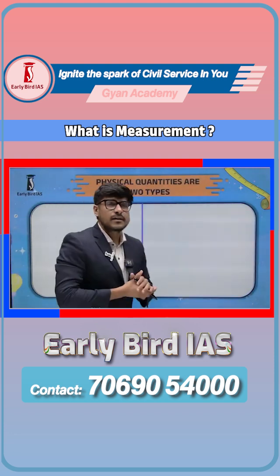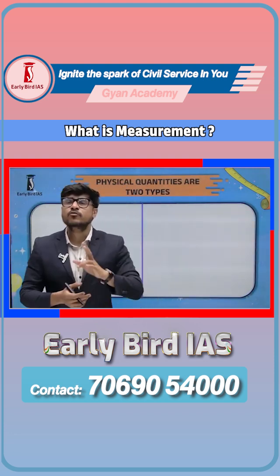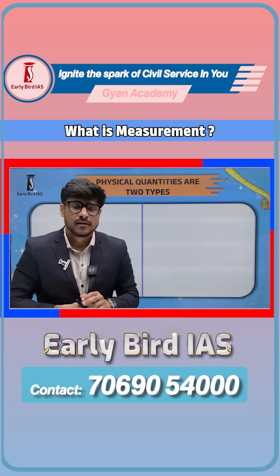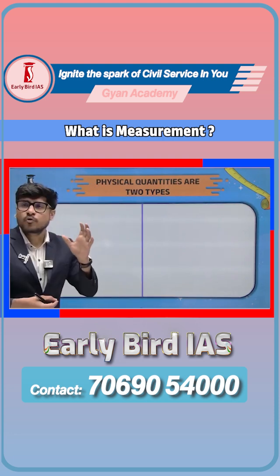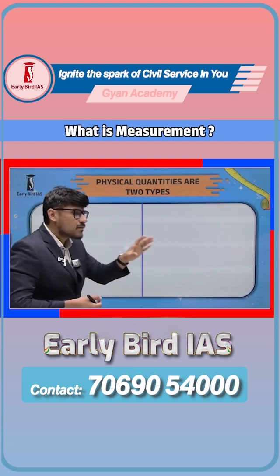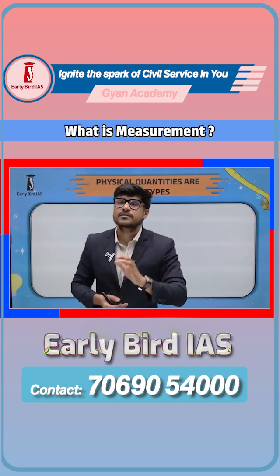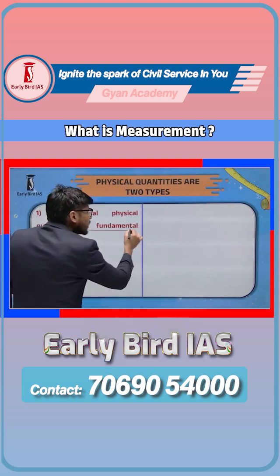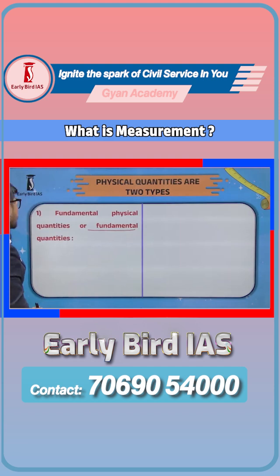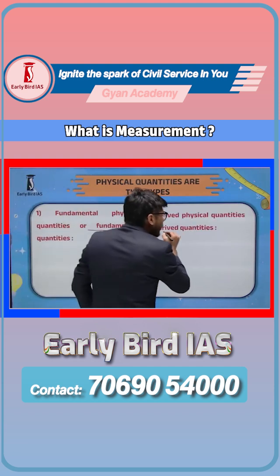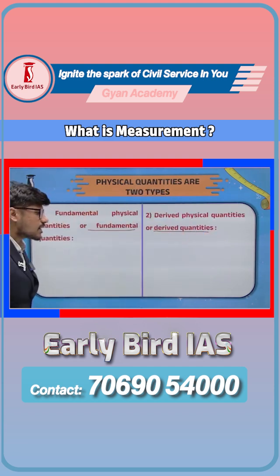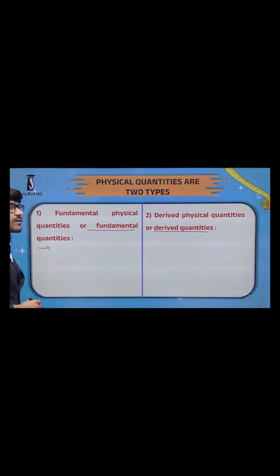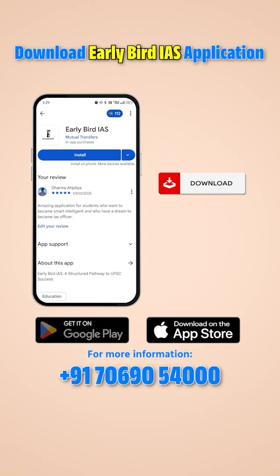Physical quantities can be divided into two parts. One part is called fundamental physical quantities and the second part is called derived physical quantities. The fundamental quantities are the quantities which are fixed.